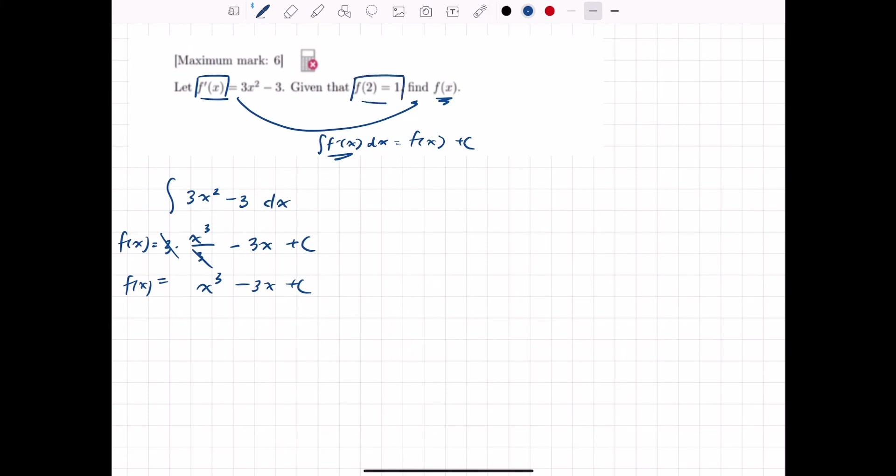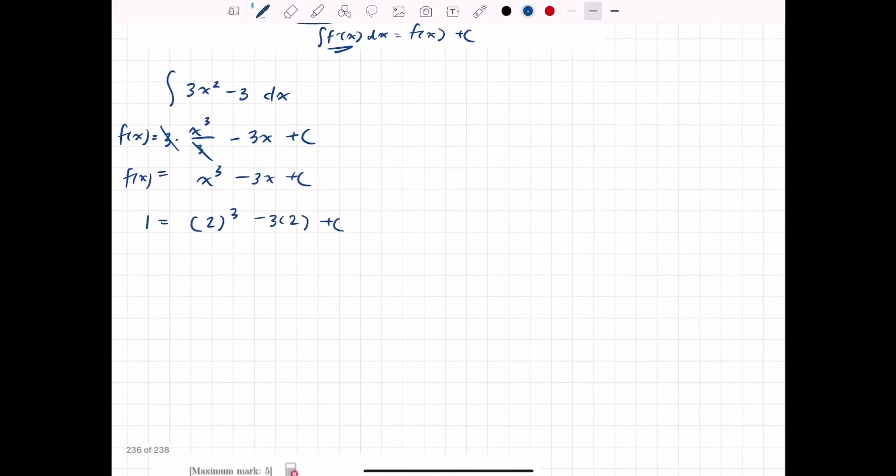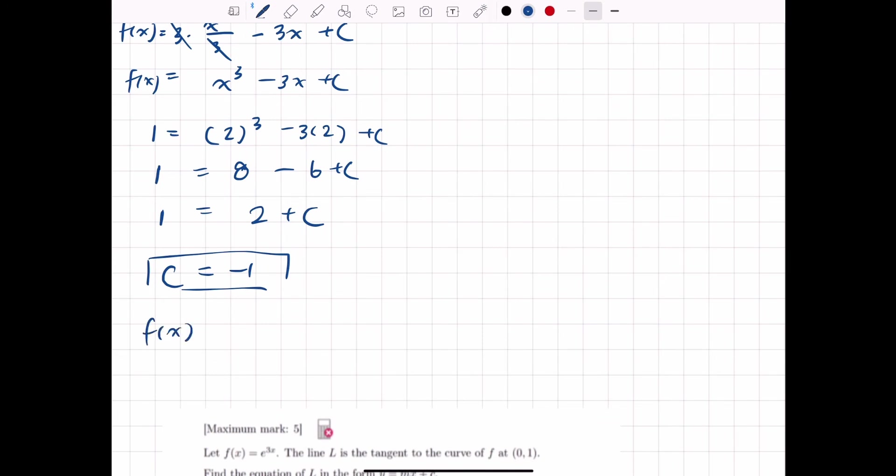Well, notice they gave us this. It's very important. So let's put what we know in. So 1 is our function f of x at x equals 2 plus c. And if we do a little bit of simplification, we should get c. We get c is equal to negative 1.